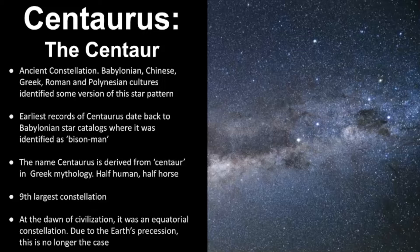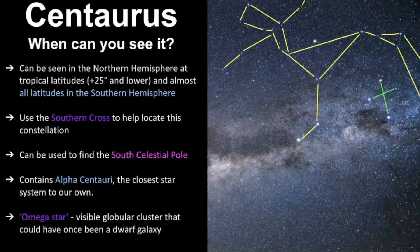Centaurus takes up a good amount of real estate in the night sky. It's the ninth largest constellation, and one thing I found really interesting was that at the dawn of civilization this was an equatorial constellation, but due to the wobble of the Earth's axis, which we call the precession of the equinoxes, this is no longer the case. So when can you see it?